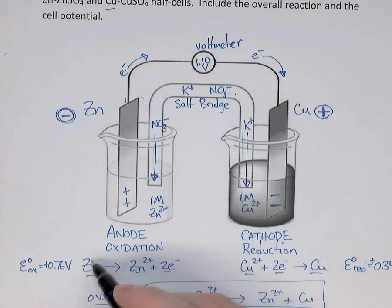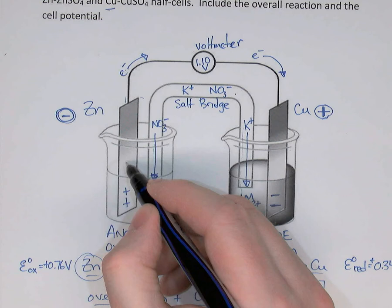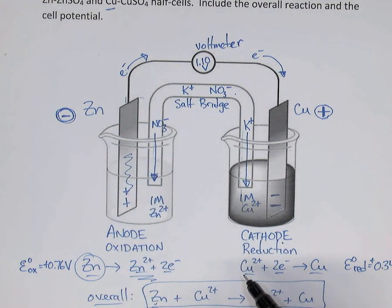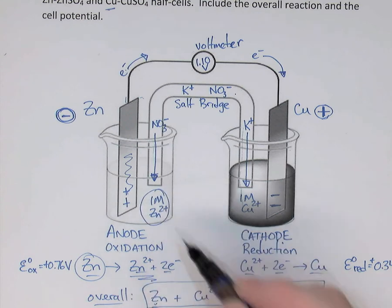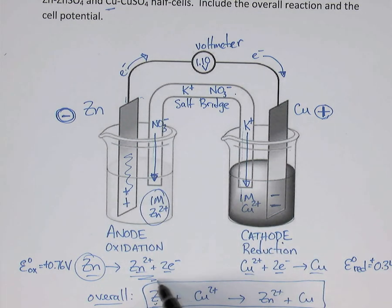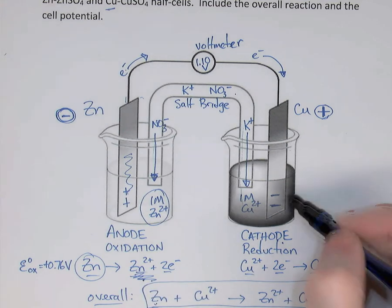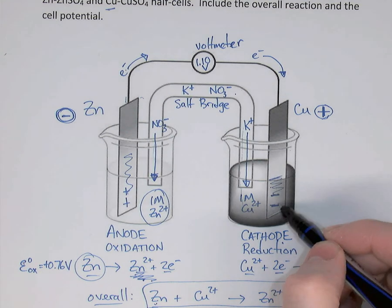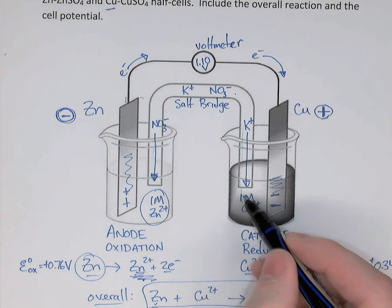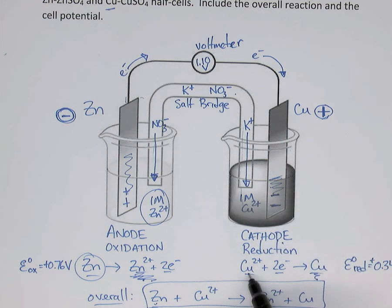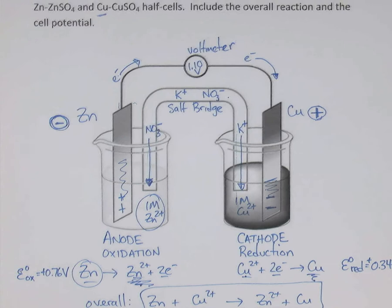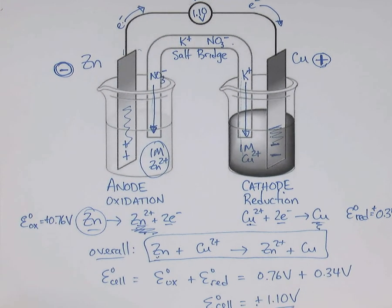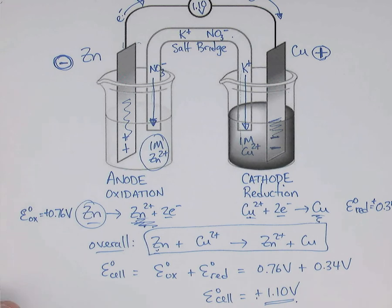Over time, because the zinc strip is being oxidized, the zinc metal strip will look like it's dissolving — its mass will decrease — while the concentration of Zn²⁺ in that half cell increases because you're producing zinc 2+ ions. The opposite occurs at the cathode: copper is precipitating on the copper electrode, so it gets larger and heavier, while the copper ion concentration decreases because Cu²⁺ is being reduced. That's a completely labeled electrochemical cell with the overall reaction and cell potential.